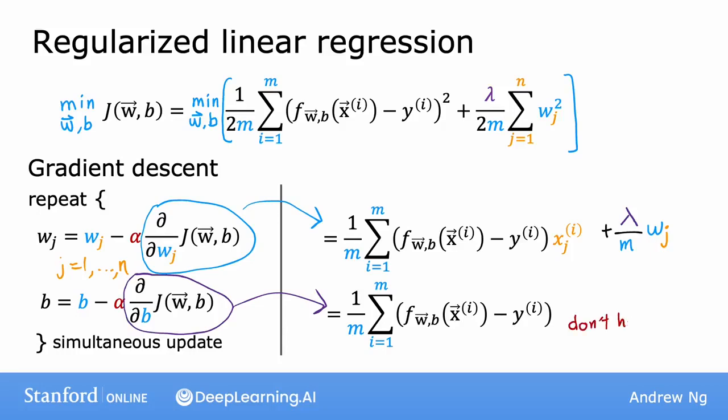Recall that we don't regularize b, so we're not trying to shrink b. That's why the updated b remains the same as before, whereas the updated w changes because the regularization term causes us to try to shrink w_j. So let's take these definitions for the derivatives and put them back into the expression on the left to write out the gradient descent algorithm for regularized linear regression.